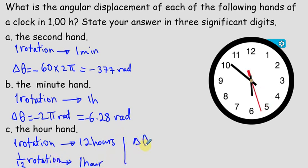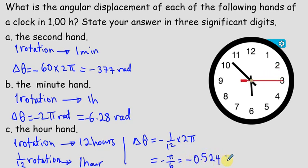So our displacement, the angular displacement of the hour hand, equals one over 12 of a rotation, which is one over 12 times 2 pi, and of course it's negative. This equals negative pi over 6, which is negative 0.524 radians. And all our solution is in three significant digits, three digits, three digits, and three digits.